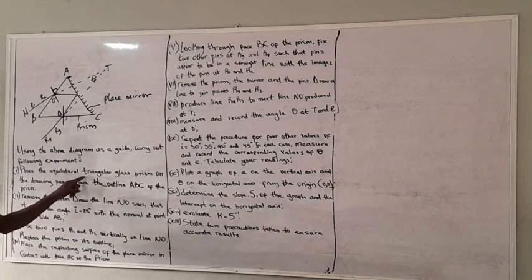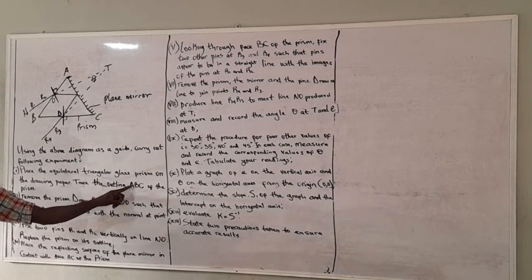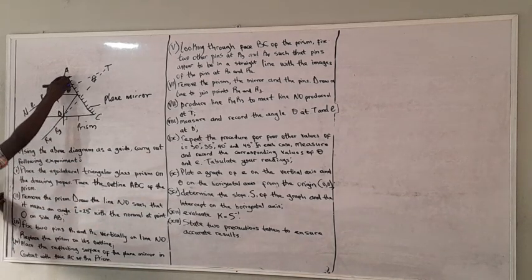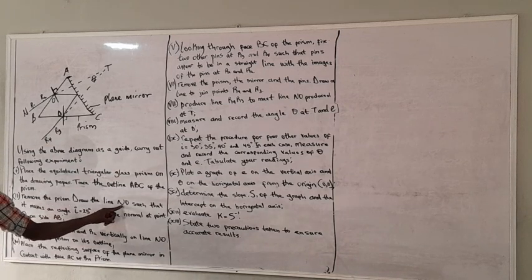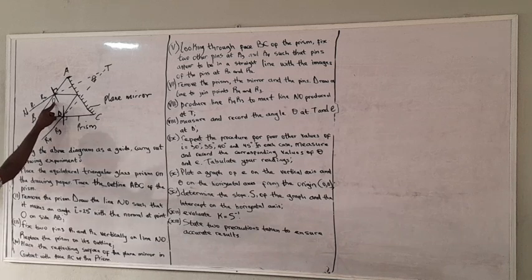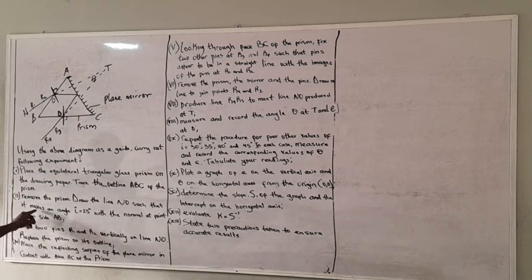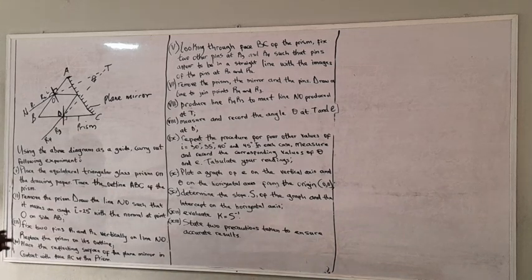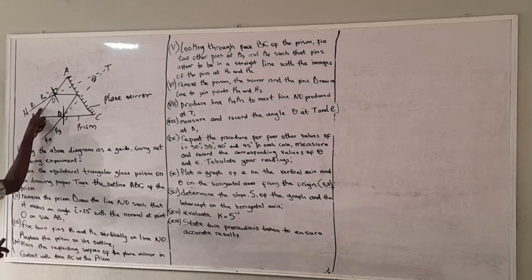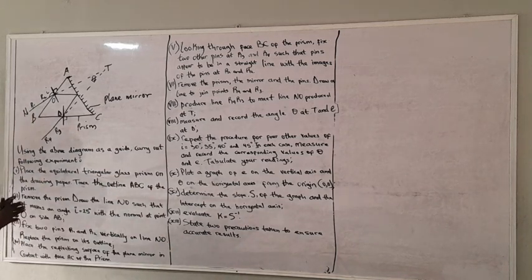Step 1: Place the equilateral triangular glass prism on the drawing paper. Trace the outline ABC of the prism. Remove the prism. Draw the line NO such that it makes an angle I equals 25 degrees — this is the angle of incidence. Note that sometimes they may ask you for the glass angle here, which you may call theta. Whatever the case, it's going to be exactly the same process.